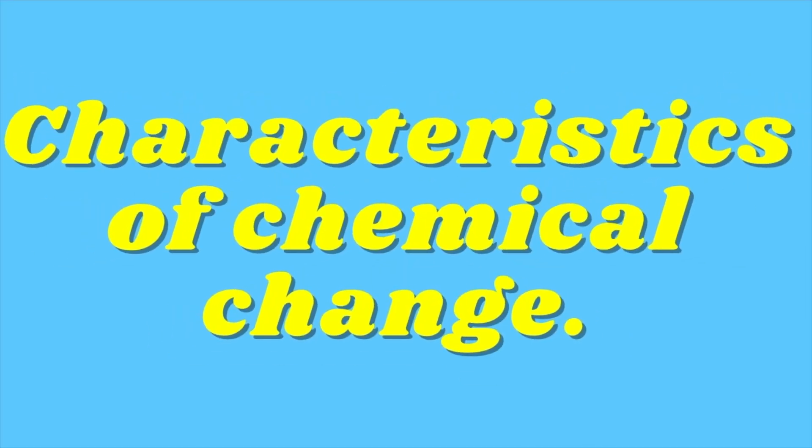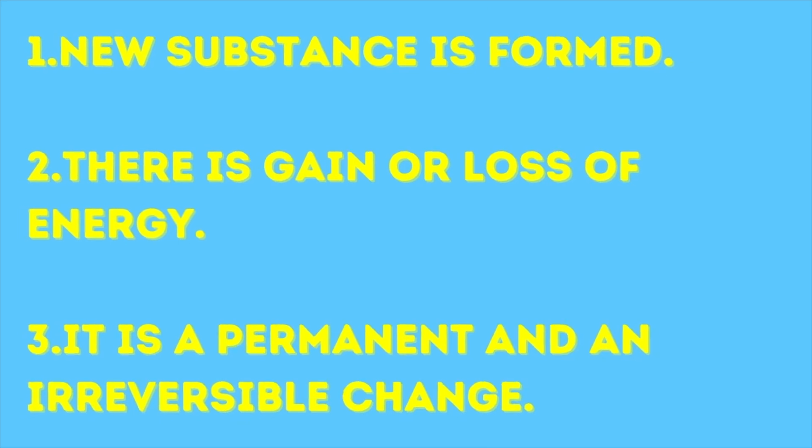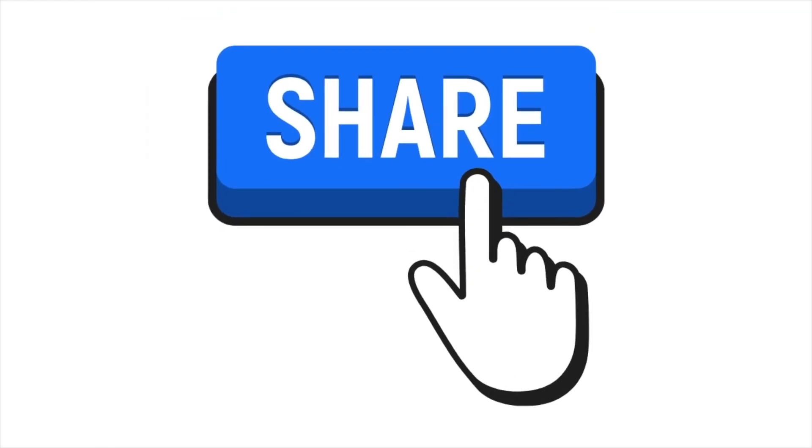Now let us summarize the characteristics of a chemical change. A new substance is formed; there is gain or loss of energy; it is a permanent and irreversible change. So friends, if rusting of iron is a chemical change, then can you tell what is the chemical name of rust? If you know the answer, please write in the comments below or write to us at advantagemasterminds@gmail.com. Hope you liked my presentation — do not forget to like, share, and subscribe to my channel. Thanks for watching!